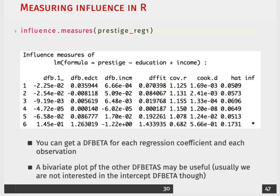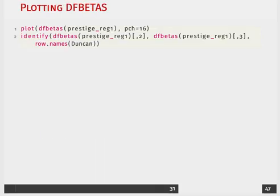A bivariate plot of the df betas may be useful. Usually, we're not interested in the df beta for the intercept though. Now, I don't want to concentrate too much on just getting them. I think it's useful to plot them, as well.